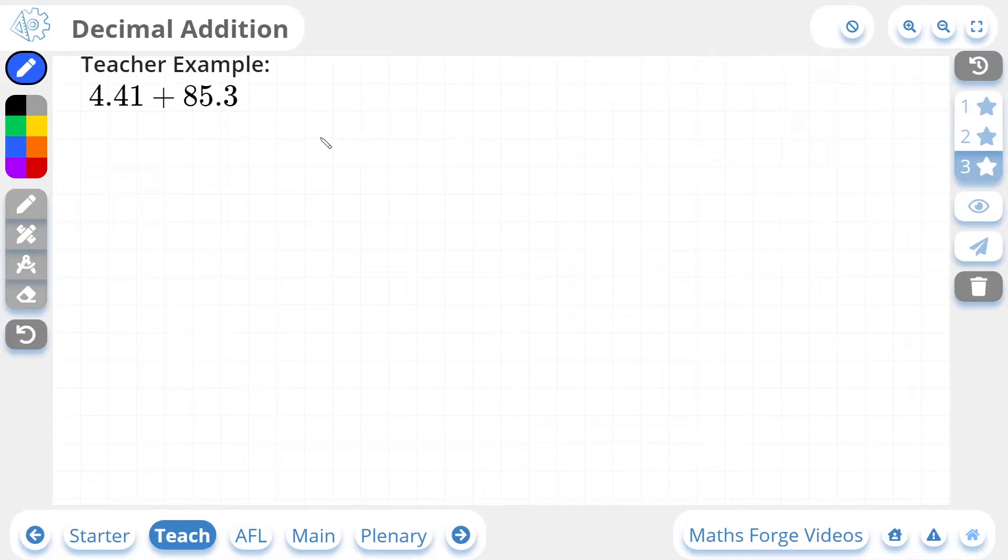Let's do a three-star example. So now we've got 4.41. We have a unit, a tenths, and a hundredths.